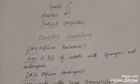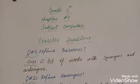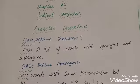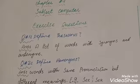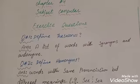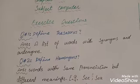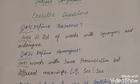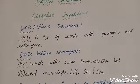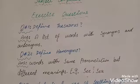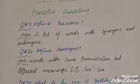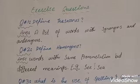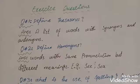Grade 6 exercise-based questions. Question number one: define features. Answer: a list of words with synonyms and antonyms. Question number two: define homonyms. Answer: words with same pronunciation but different meanings. Example: the letter C — sea and see.